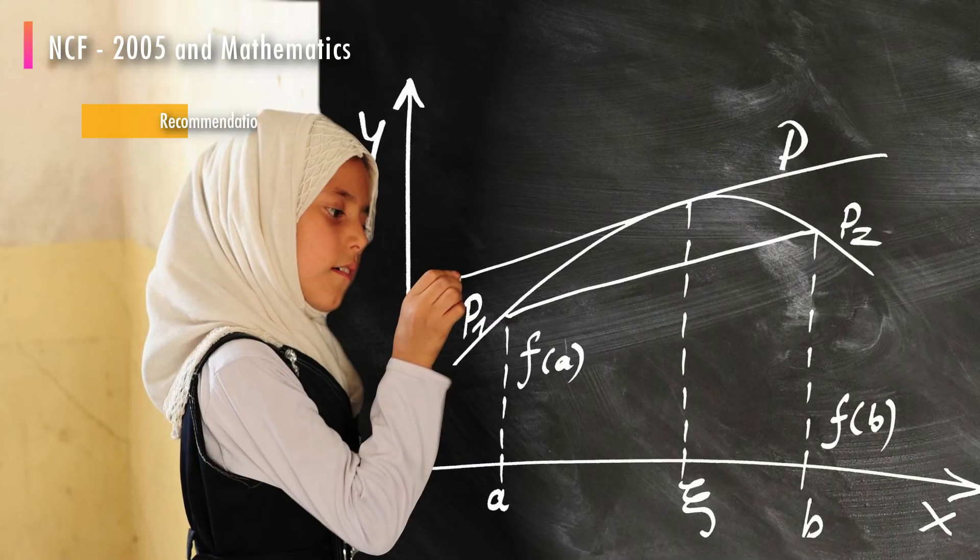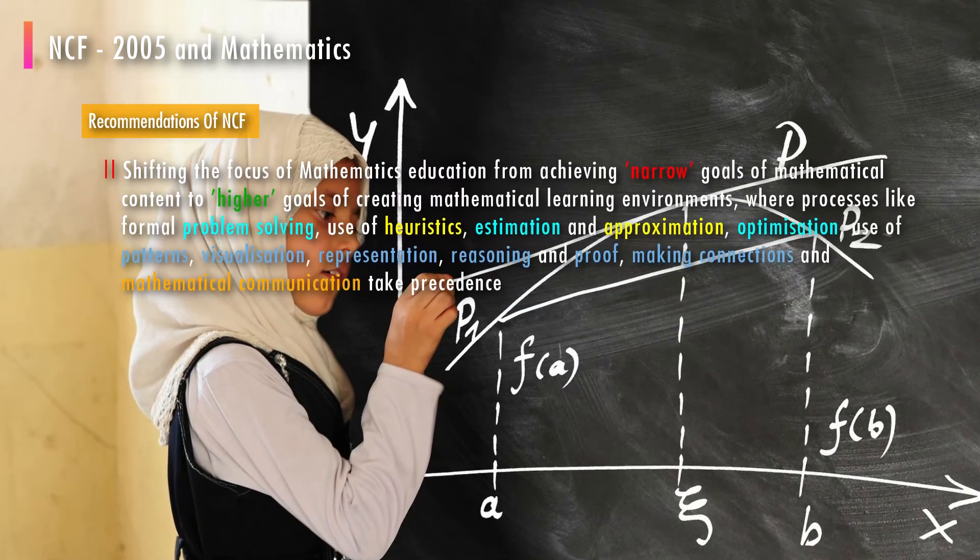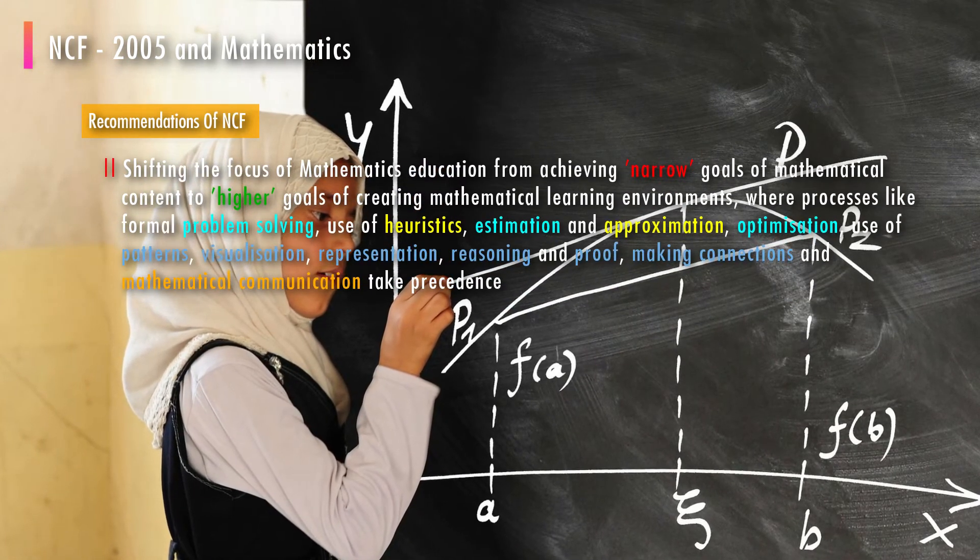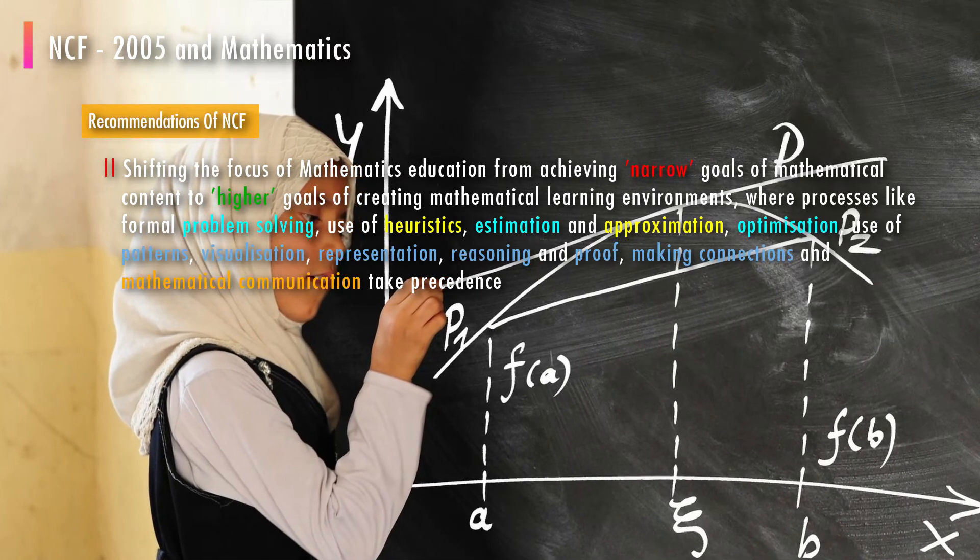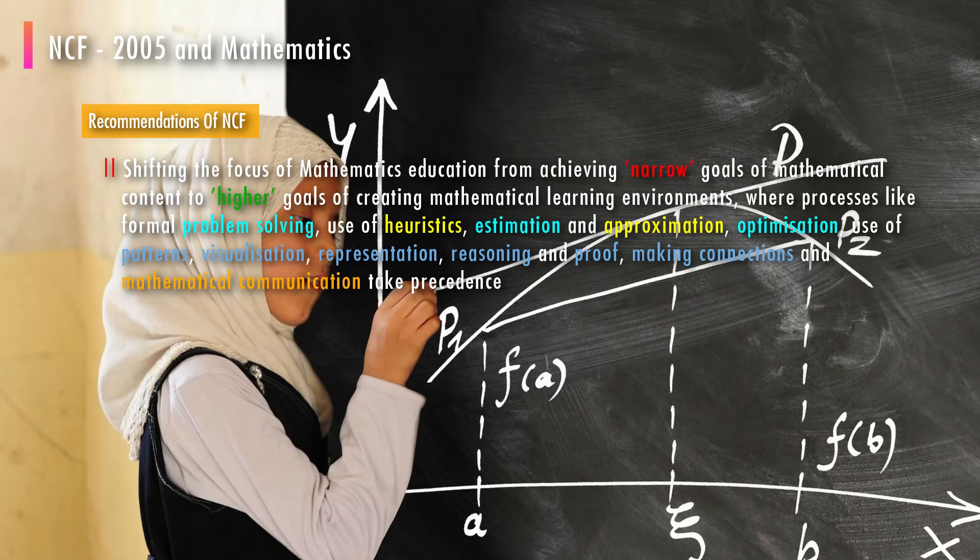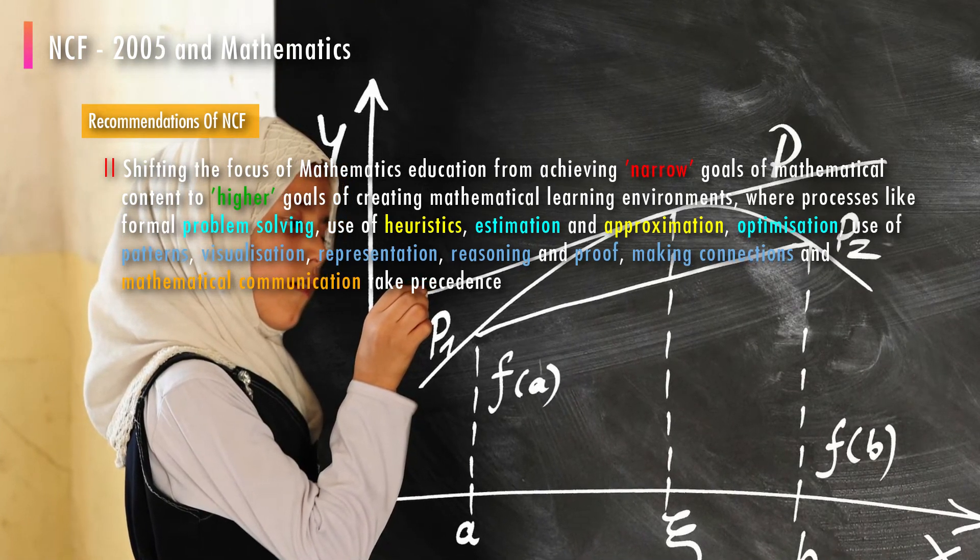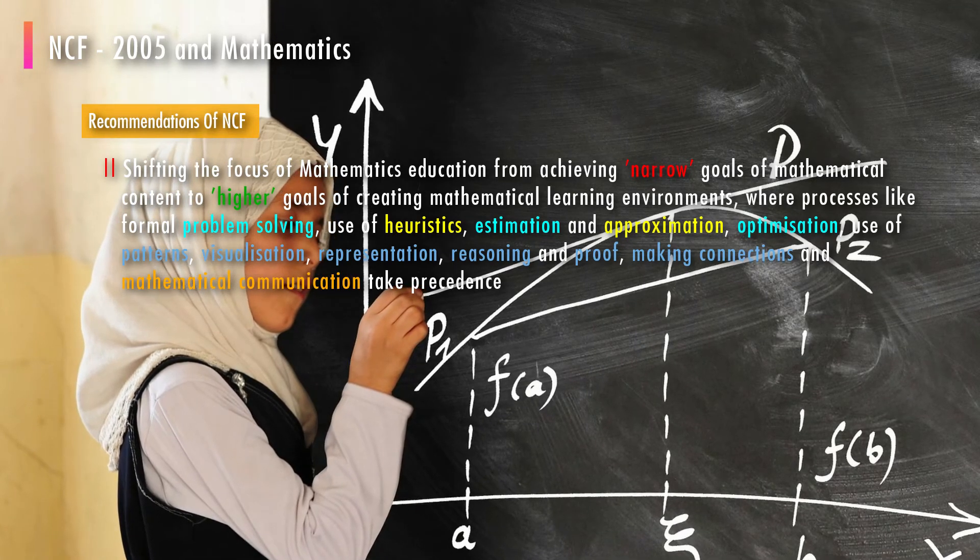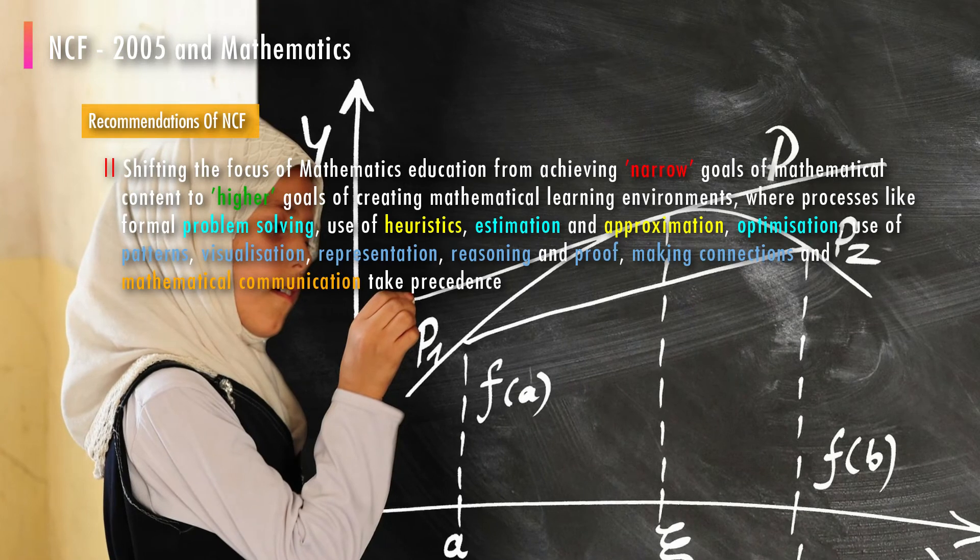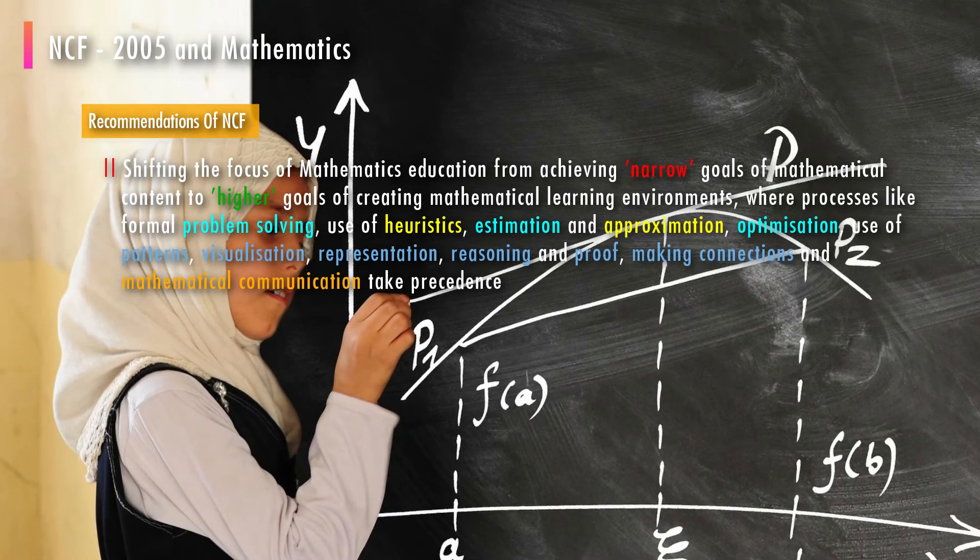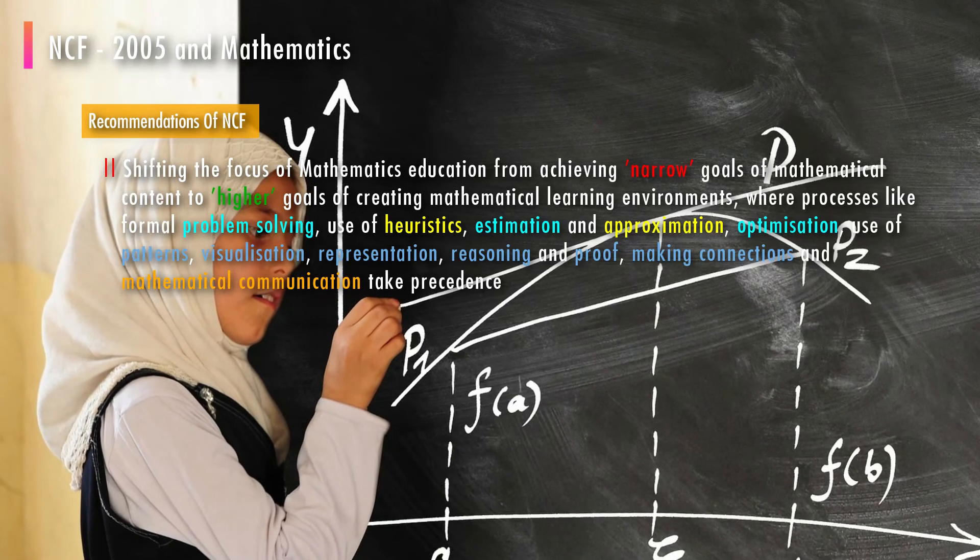The NCF therefore recommends shifting the focus of mathematics education from achieving narrow goals of mathematical content to higher goals of creating mathematical learning environments where processes like formal problem solving, use of heuristics, estimation and approximation, optimization, use of patterns, visualization, representation, reasoning and proof, making connections, and mathematical communication takes precedence.